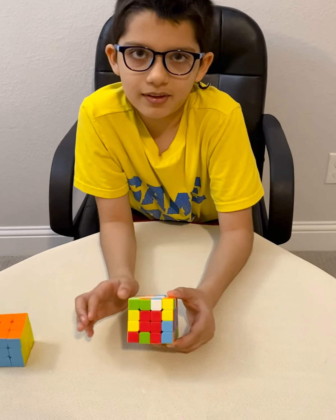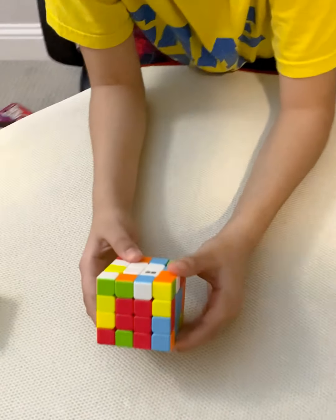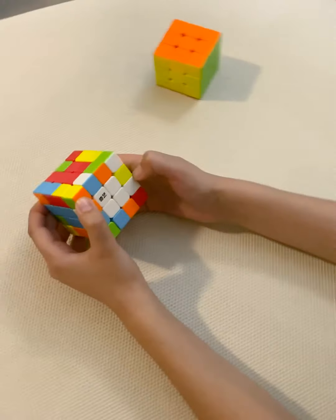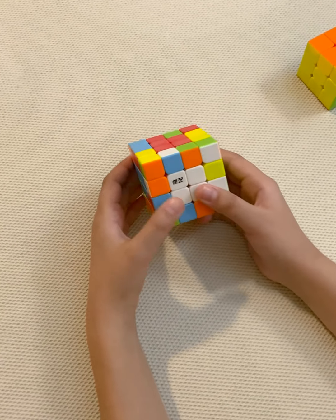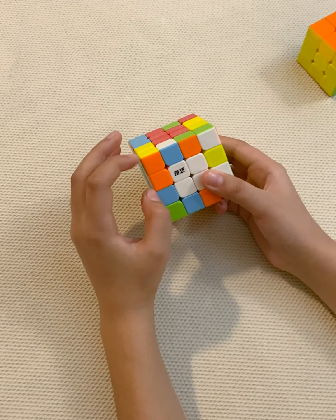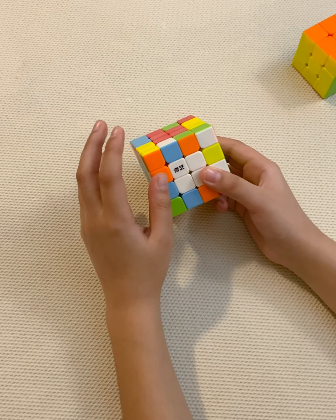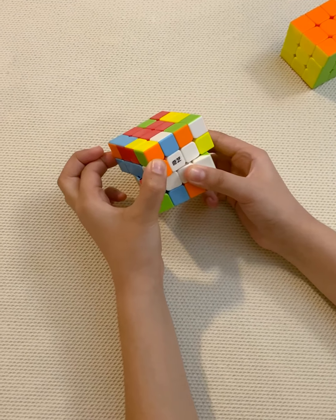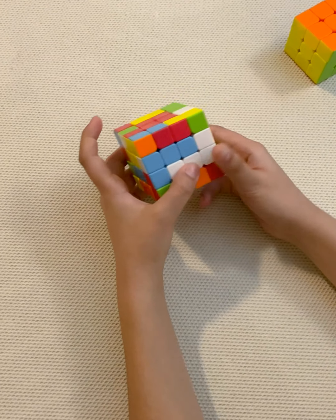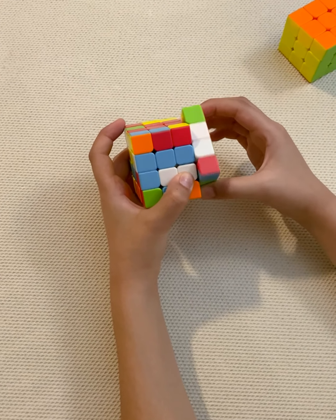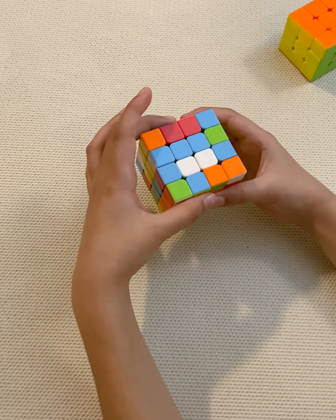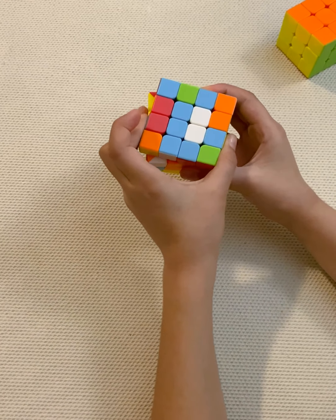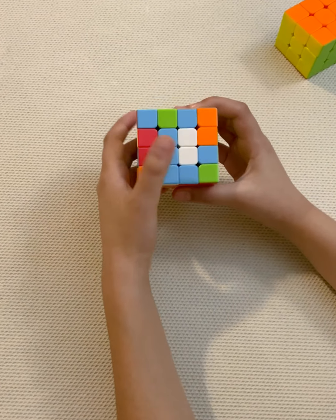I have a very simple algorithm that's very easy to memorize. We're going to be using two layers a lot. Take the top two layers, turn it once to the left. Take the right layer, turn it once up. Take the front layer, turn it once counterclockwise. Take the top layer, move it once to the left.